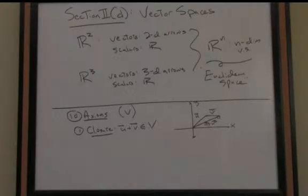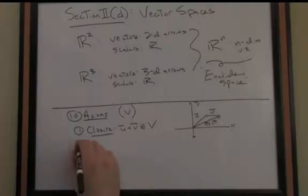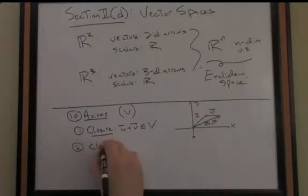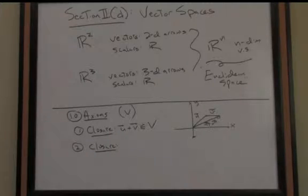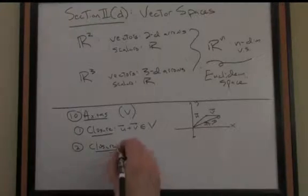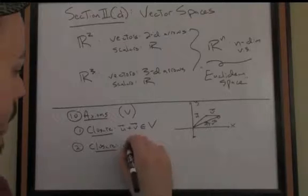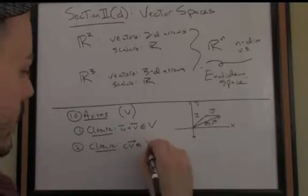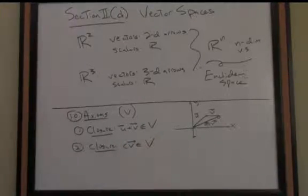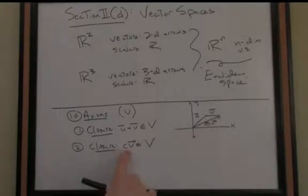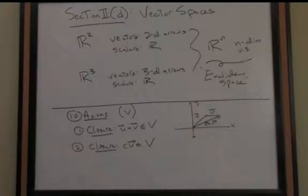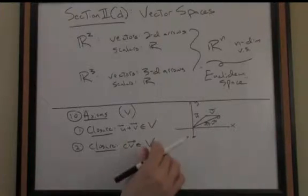So we have closure with respect to the addition of vectors. Now we also want closure, there's sort of a second type of closure, in this case with respect to what was our other operation, fundamentally that was scalar multiplication. So of course we also want closure with respect to scalar multiplication. In other words, if I take any scalar value, I want this in total generality, if I take any scalar value and scale any vector in my vector space V by that scalar value, I'm closed.